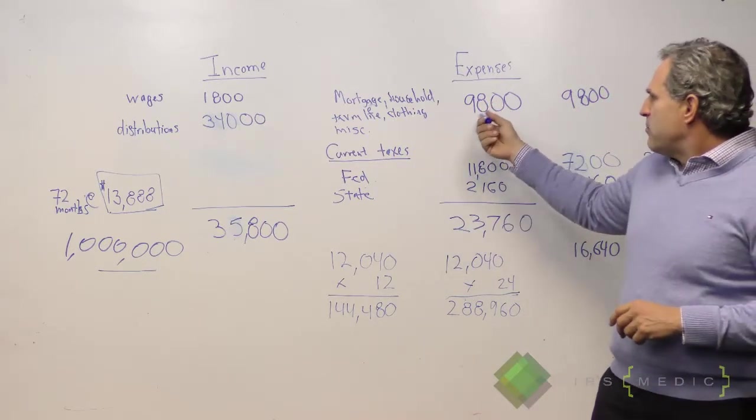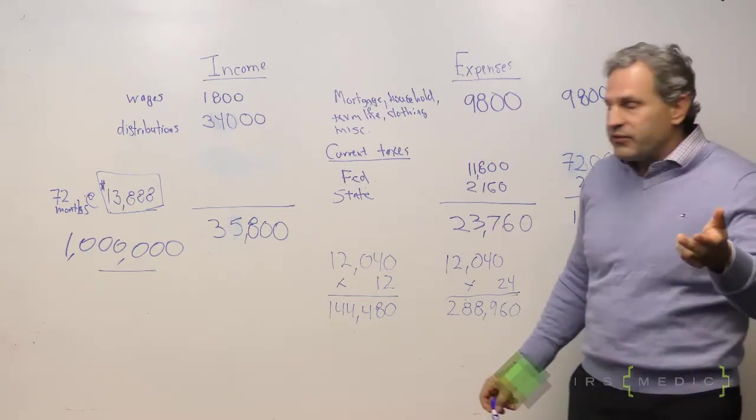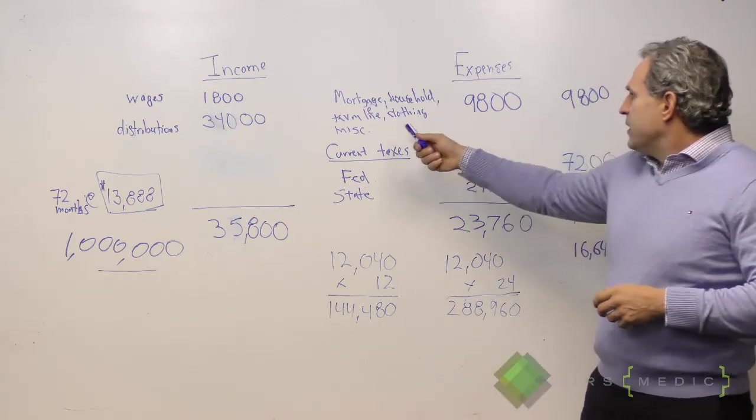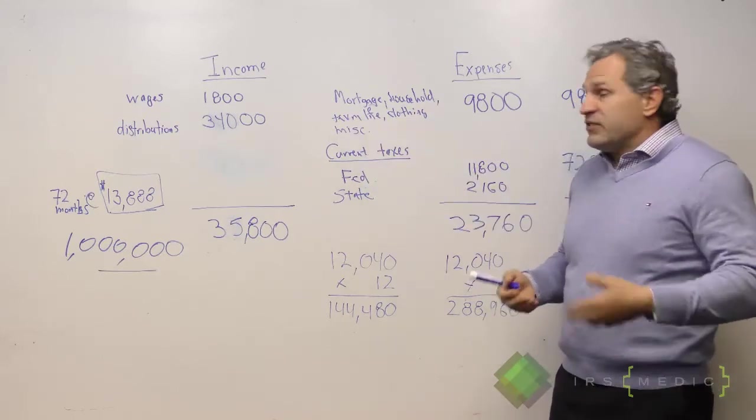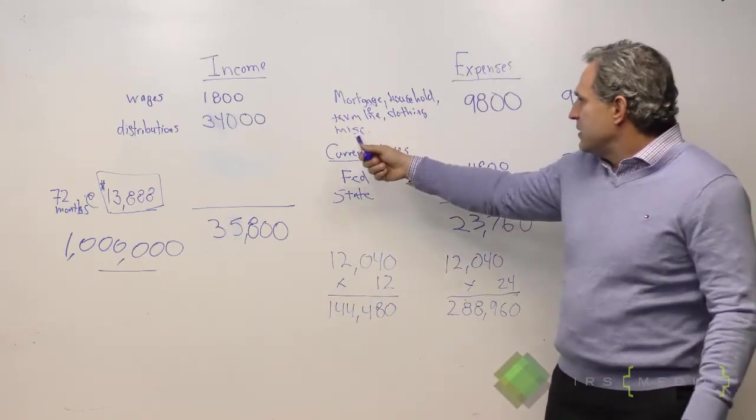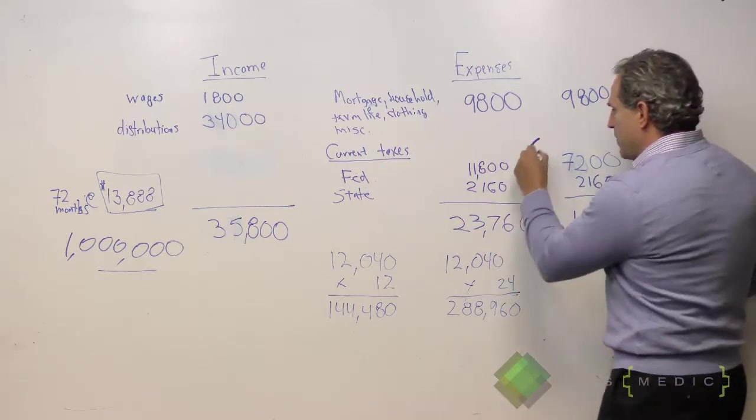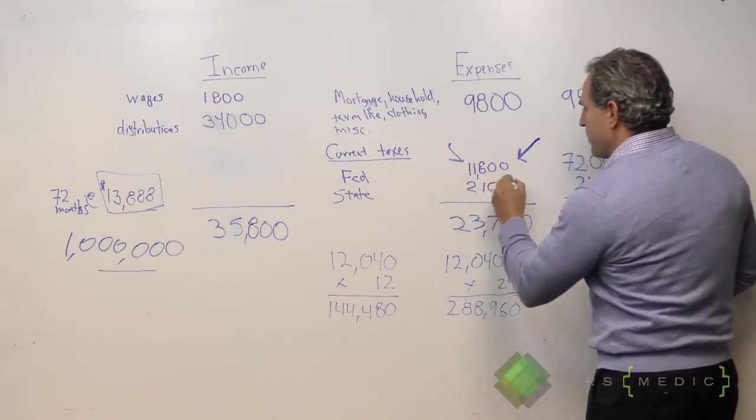He's got $9,800 in monthly expenses for his house, property taxes for where he lives, and he has to live where he lives in order to make this kind of money. He's got a term life policy, clothing miscellaneous $1,800. This is what I want to focus on right here.